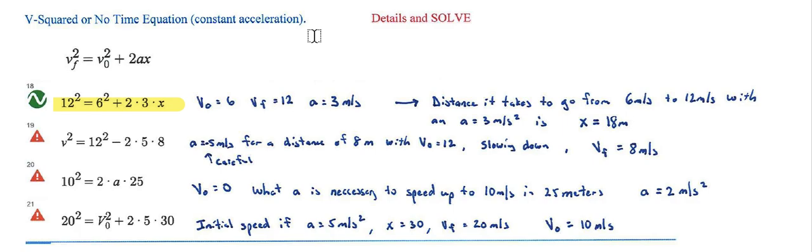So I got a bike, and I'm going 6 meters per second and I want to increase my velocity to 12. I know I can accelerate at 3 meters per second squared. The question is how long will I need to do that for—not time, but distance. What's the required distance? It ended up being 18 meters.